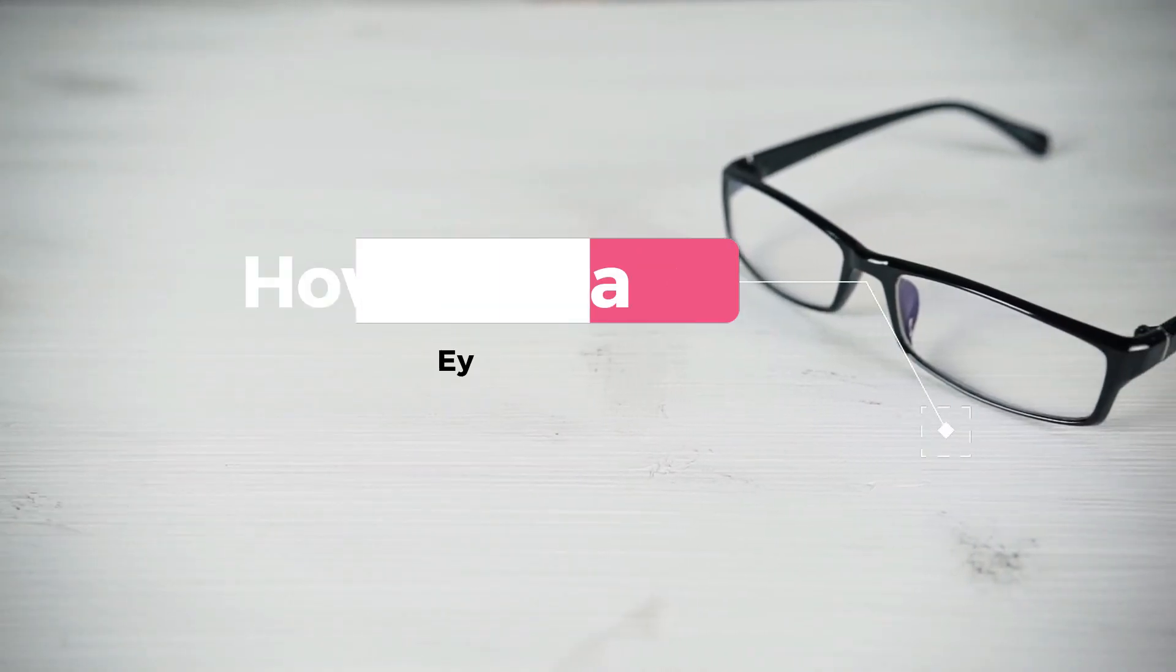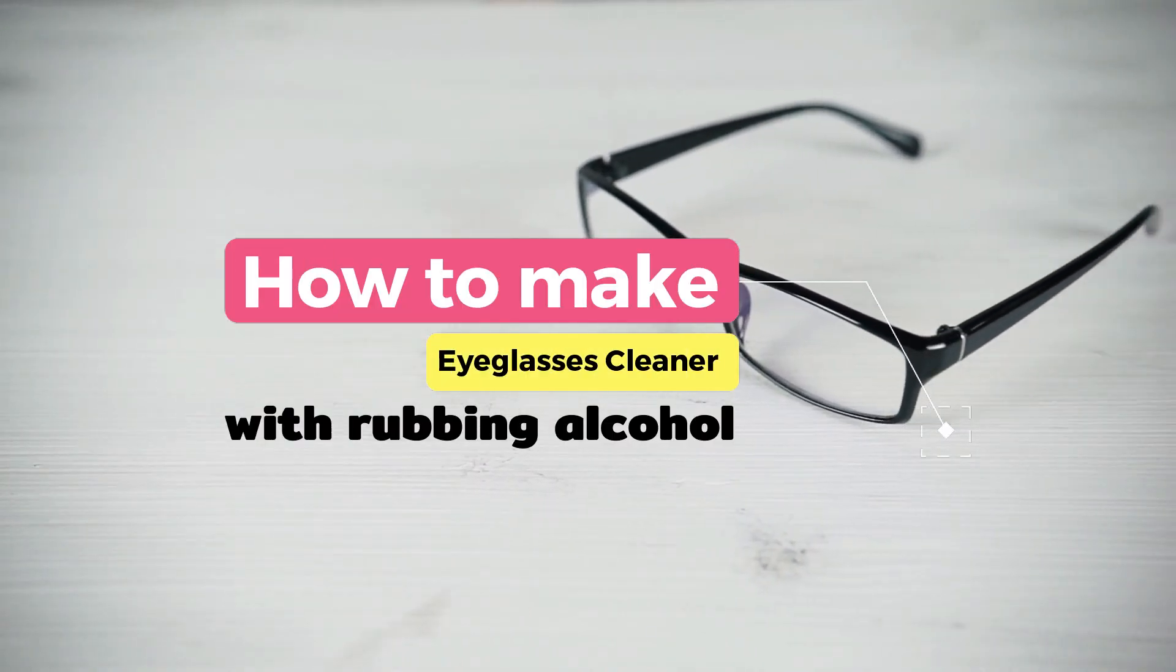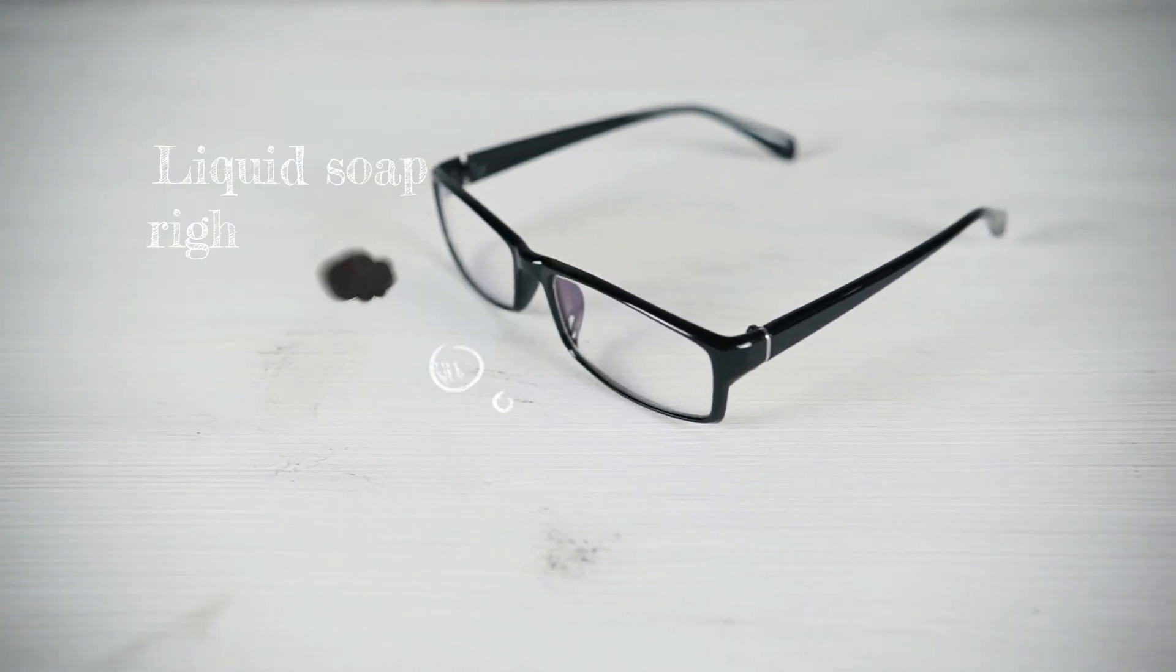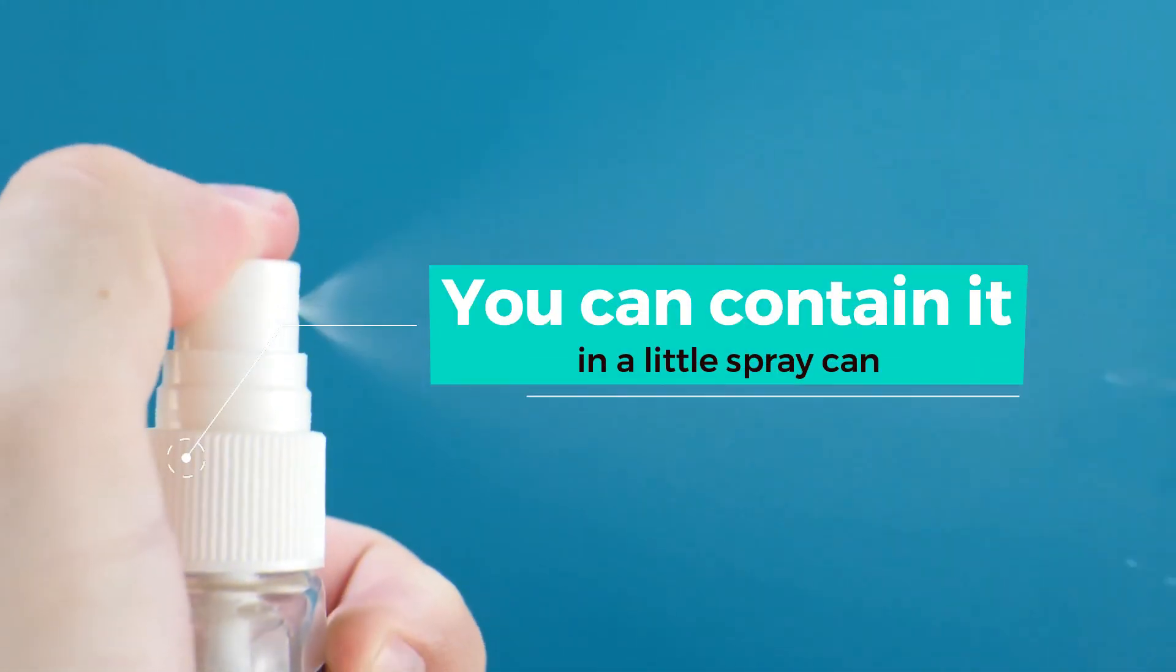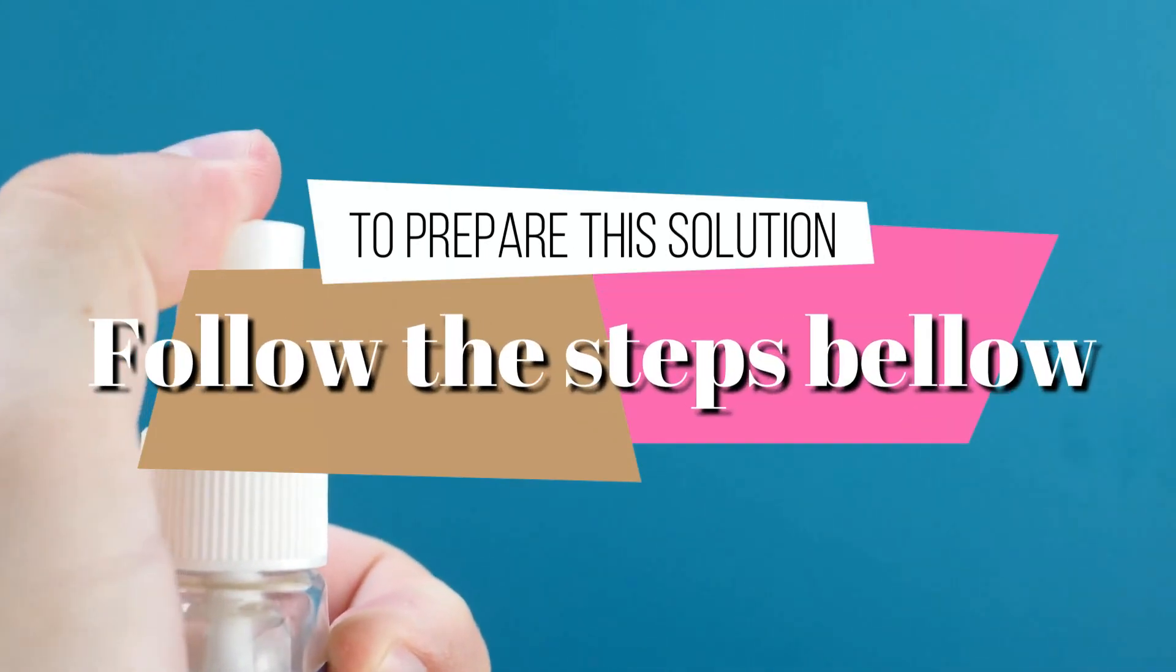Now, the first one we would be checking out is how to make eyeglasses cleaner with rubbing alcohol and liquid soap right in your kitchen. You can contain it in a little spray can. To prepare this solution, follow the steps below.